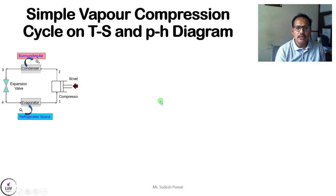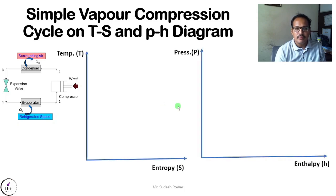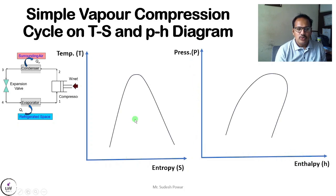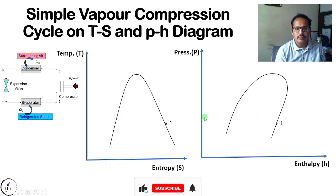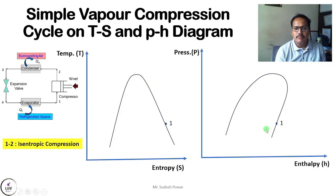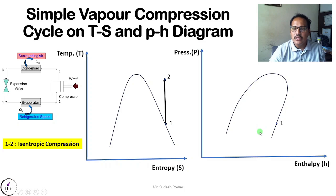Now let's look at the simple vapor compression cycle on both the TS diagram and the PH diagram side by side. The PH diagram has pressure on one axis and enthalpy on the other, and both diagrams have their respective domes. Point 1 is on the saturated vapor line in both diagrams. Process 1 to 2 is isentropic compression: on the TS diagram it is a vertical straight line, while on the PH diagram the constant entropy lines are slightly curved and inclined.